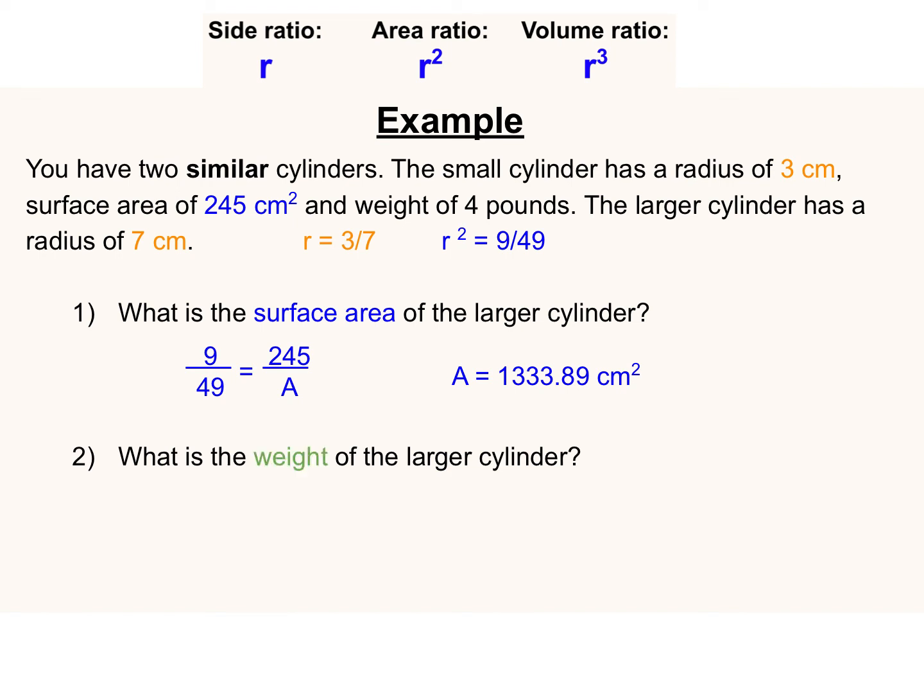So for example two, we're asked to find the weight of the larger cylinder. Now, weight is a representation of volume. So the first step is finding the volume ratio. We recall that we cube the original side or length ratio. So we get 27 over 343.